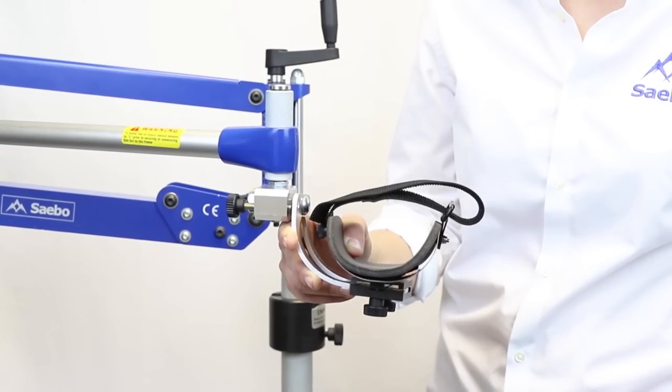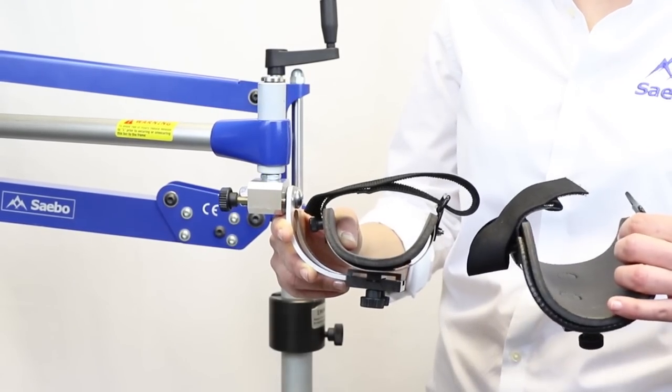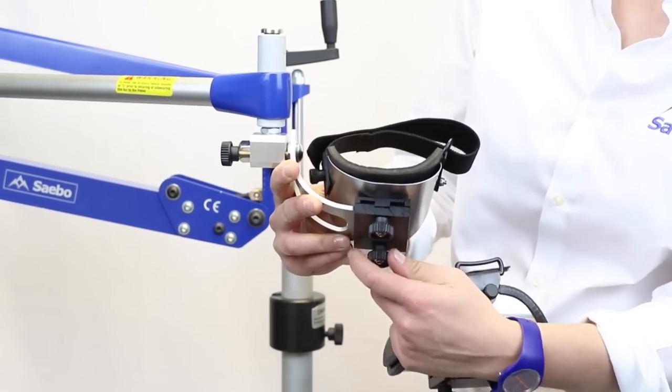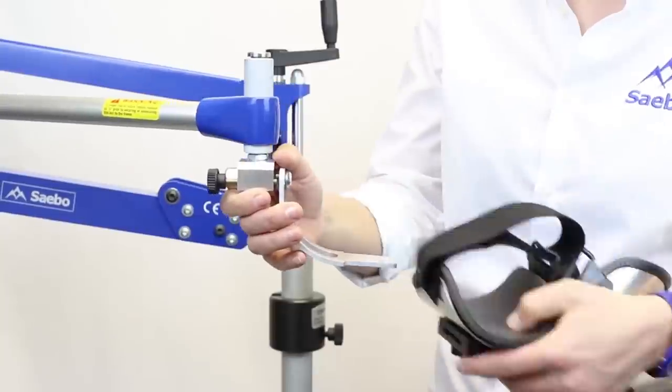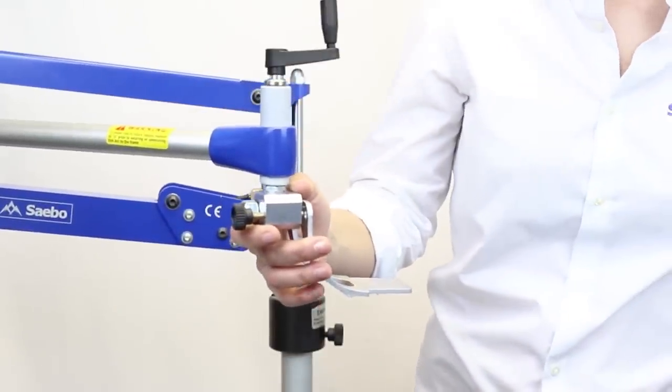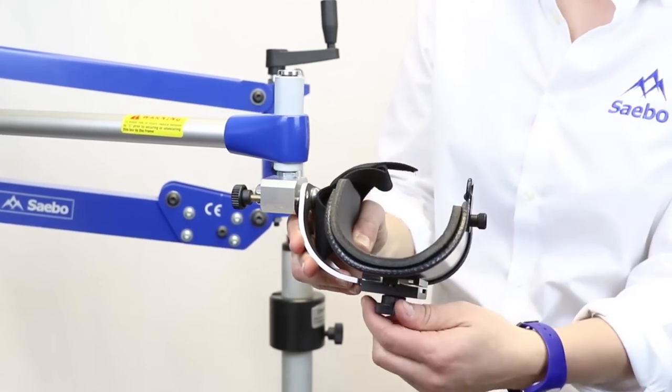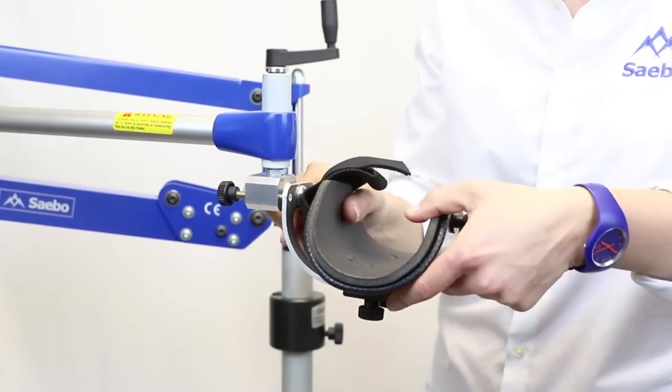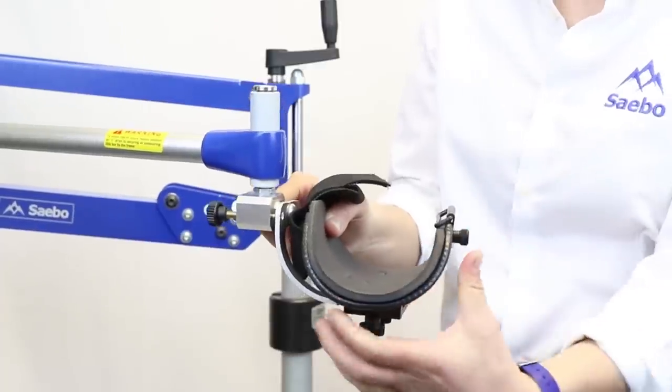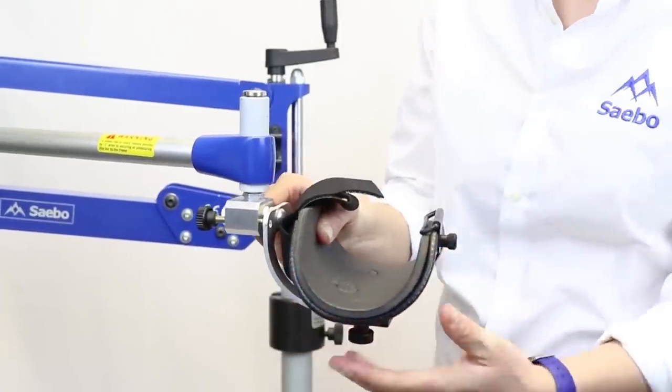We do have different forearm support sizes. So if you are combining the device with the Sabo Flex or your patient has a larger forearm you can swap over the size. The aluminium forearm supports are also malleable so you can adjust to the size of your patient's forearm.